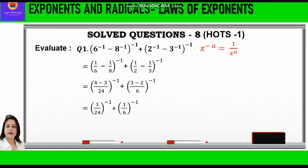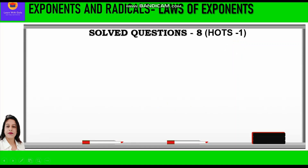Now 4 minus 3 is 1, so we have 1 upon 24, whole raised to power minus 1, and 3 minus 2 is 1, so 1 upon 6, whole raised to power minus 1. Again in negative exponent, we convert to positive by reciprocating the base, giving us 24 plus 6, which equals 30. So the answer to question 1 is 30.